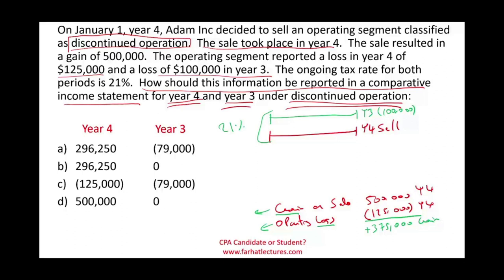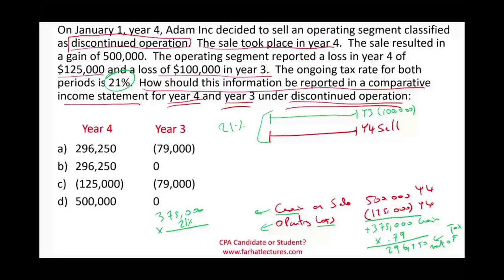The bad news is this gain will have to be reported net of tax. The tax rate is 21%, meaning we only keep 79% of this amount. So $375,000 times 0.79 equals $296,250. To verify: we owe taxes of $375,000 times 21% = $78,750. Therefore, $375,000 minus $78,750 equals $296,250 net of tax.